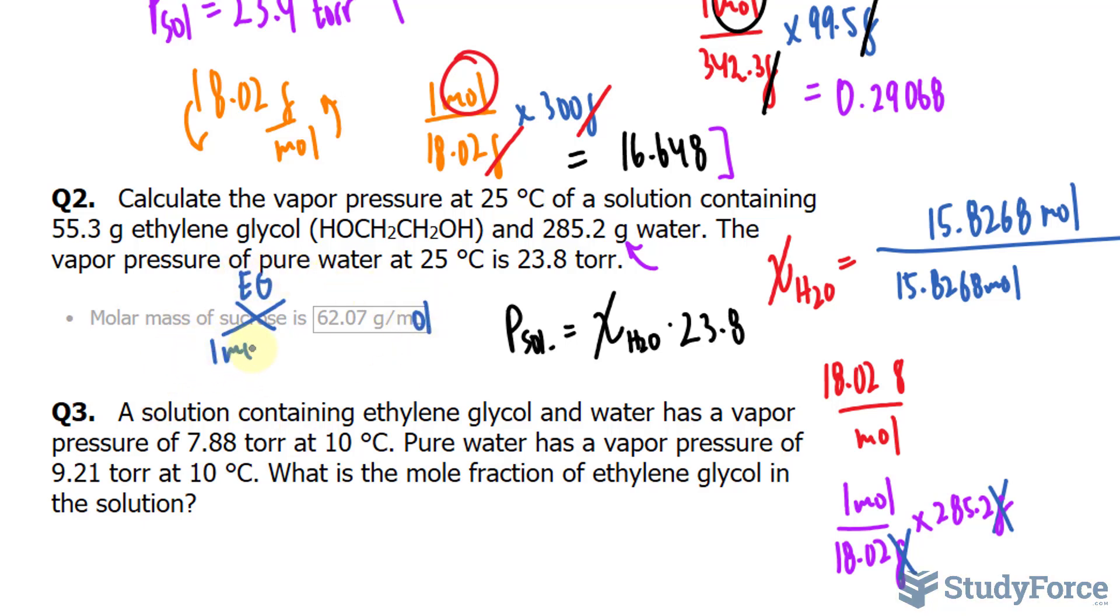We have one mole at the top and 62.07 grams at the bottom being multiplied to its mass. That was 55.3, and we get the moles of the solute.